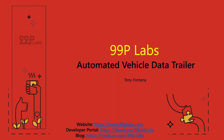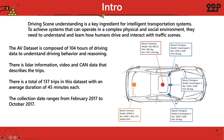Hello everyone, I'm Tony Fontana with 99p Labs, and today we're going to be talking about the automated vehicle dataset, otherwise known as the HDD dataset. I'll talk a little bit more about why it's referred to as that, but for now let's just jump right in. Driving scene understanding is a key ingredient for intelligent transportation systems. To achieve systems that can operate in complex physical and social environments, we need to understand and learn how humans drive and interact with traffic scenes, and thus the automated vehicle dataset can help you do that.